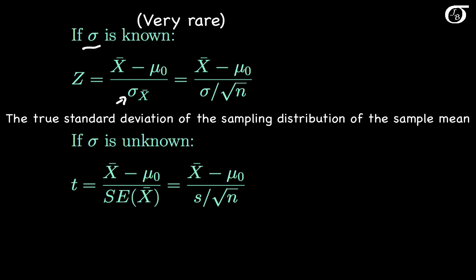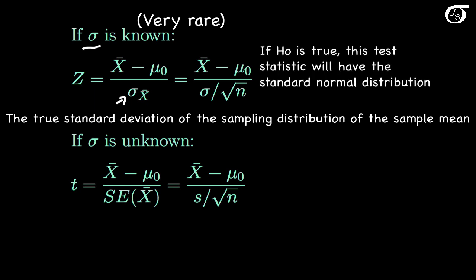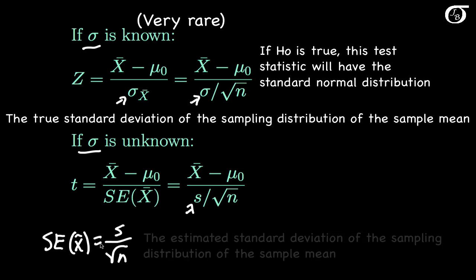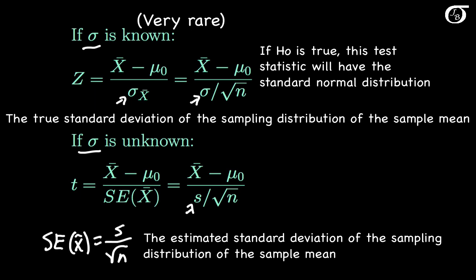If the null hypothesis is true, this z statistic will have the standard normal distribution. In practice, sigma is almost never known, and so we will typically be using a t-test. If sigma is not known, we estimate it with the sample standard deviation s. We call s divided by the square root of n the standard error of the sample mean x-bar, which is the estimated standard deviation of the sampling distribution of the sample mean.